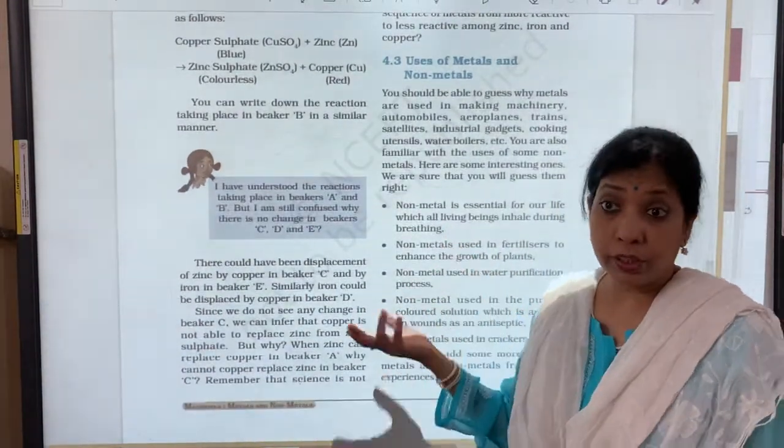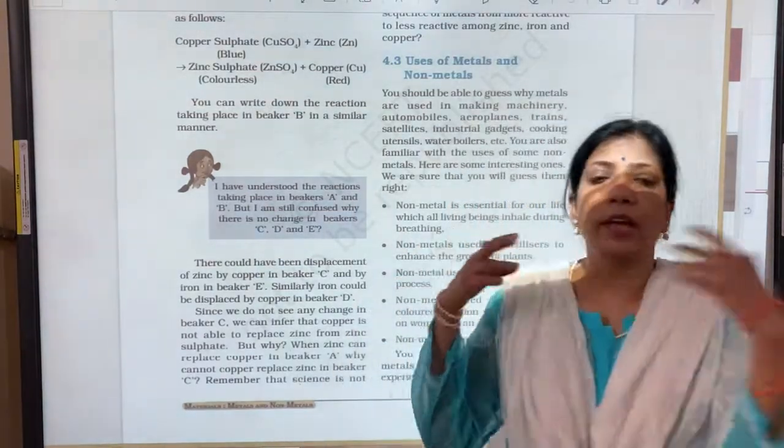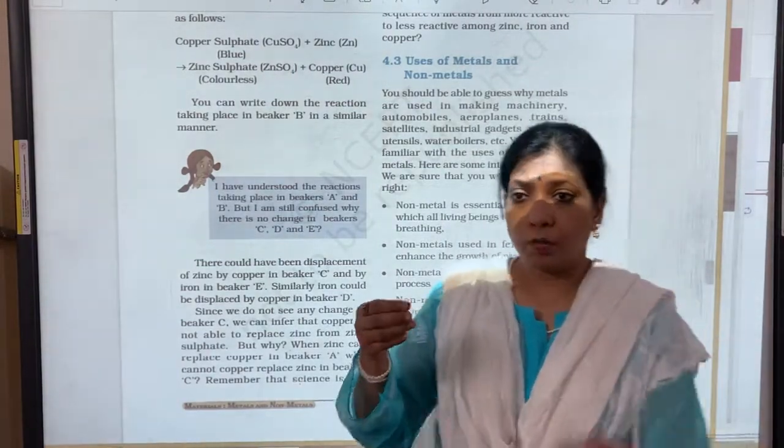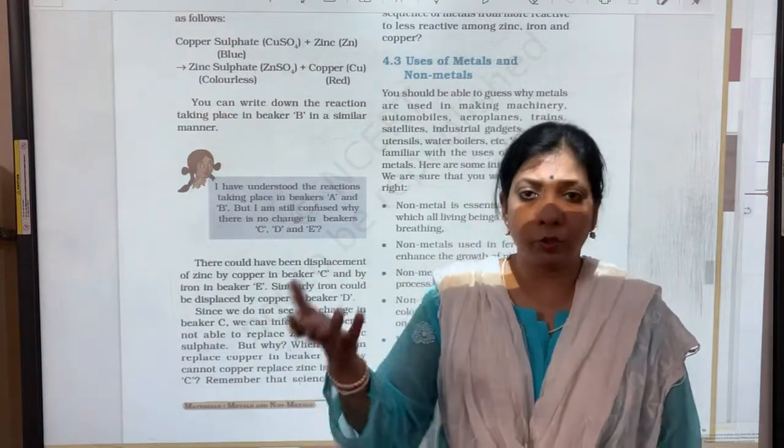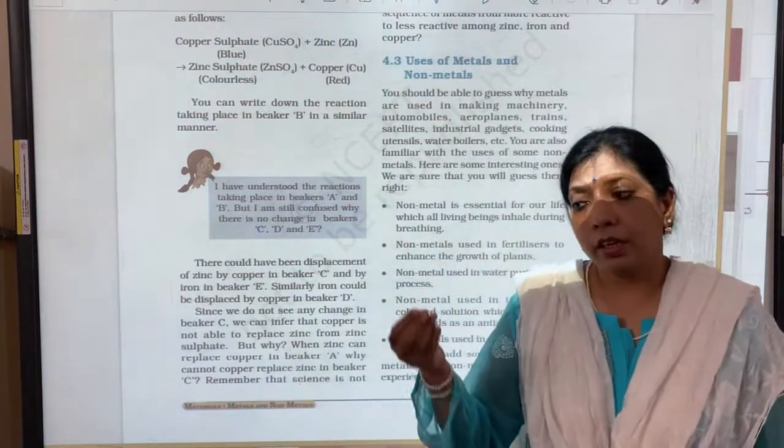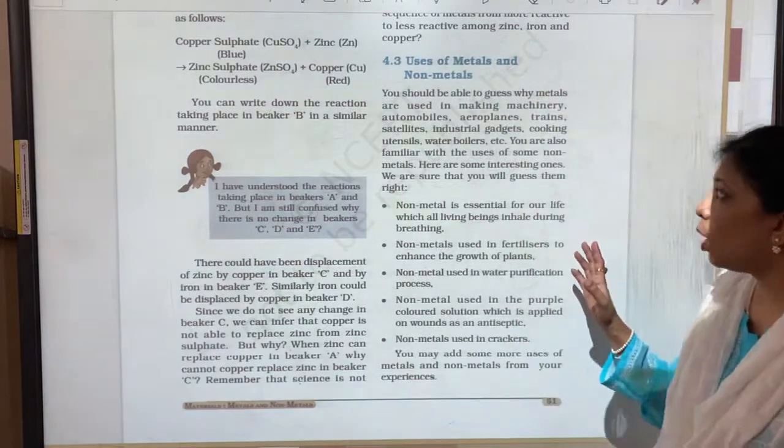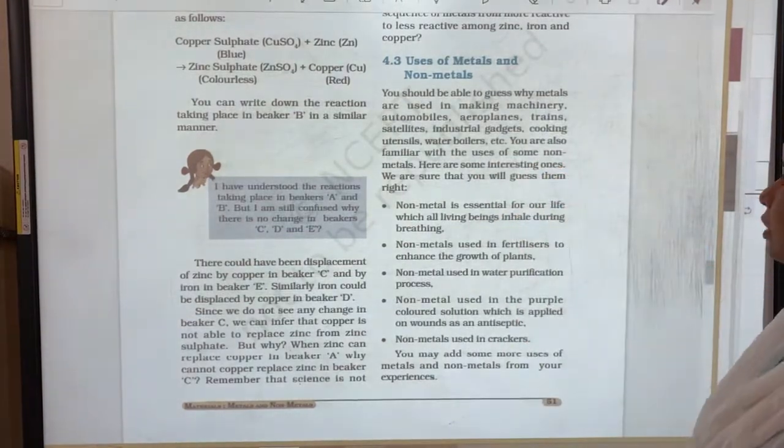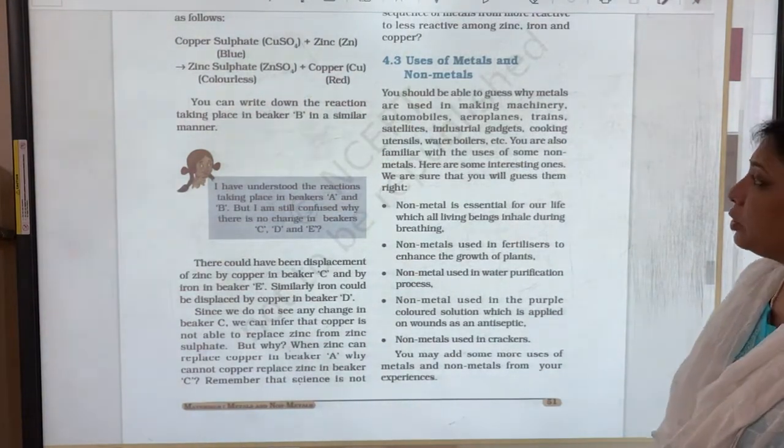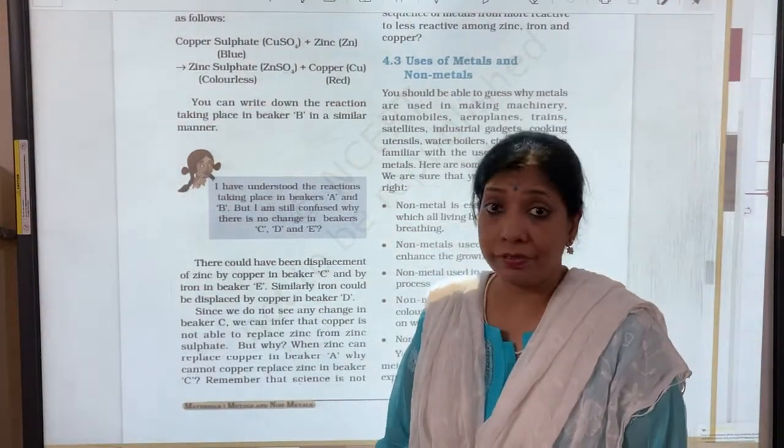Even our body has metal into it. Iron is very much there in the hemoglobin. Otherwise you look at the equipment all around you, you can see the usage of metals. The watch you are wearing, the wristwatch that your dad is wearing, the jewellery that your mother is wearing, the pots, the utensils in which she is cooking, everything is made up of metals. Industrial gadgets, satellites, trains, aeroplanes, automobiles, machinery, cooking utensils, water boilers, all the industrial usage.